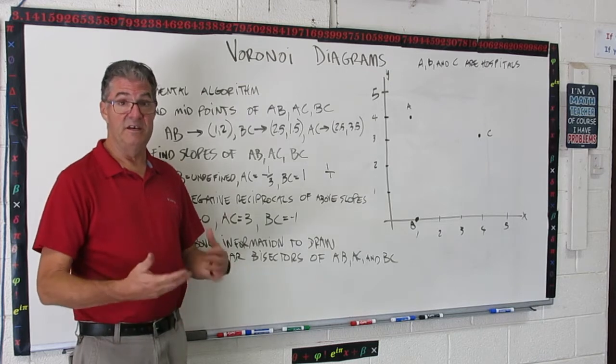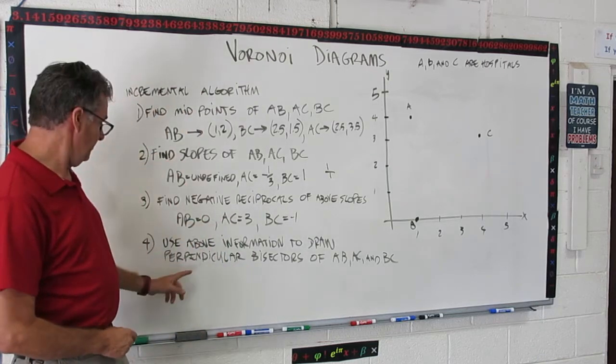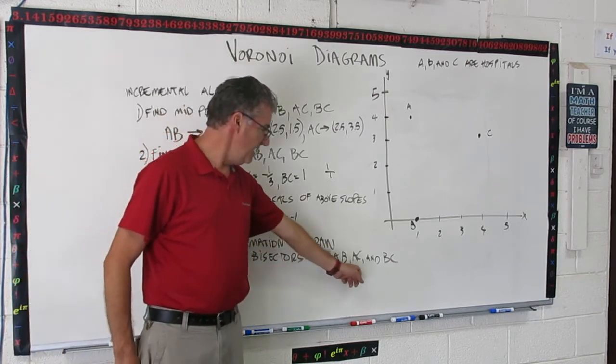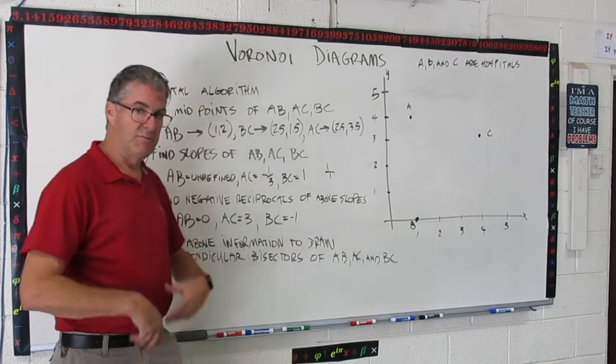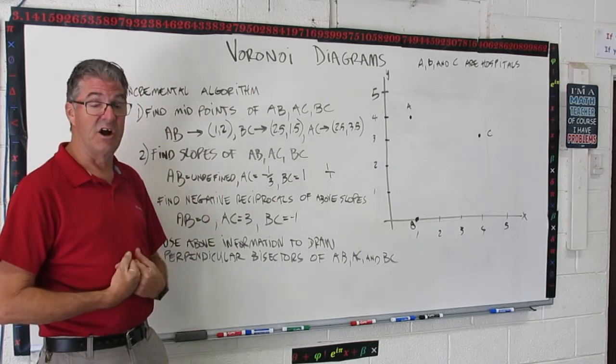The next step is to use this information that we just distilled to draw perpendicular bisectors of AB, AC, and BC. And I know we're piling a lot of steps on here with no real result, but it's going to come together on the next board.